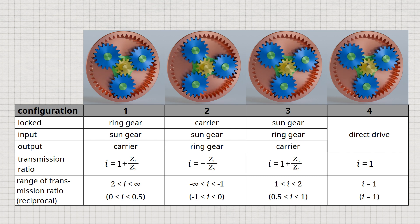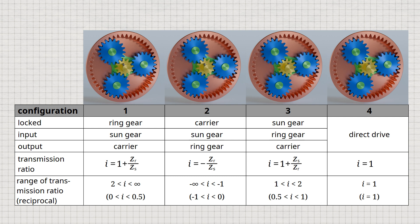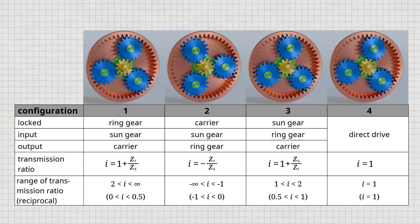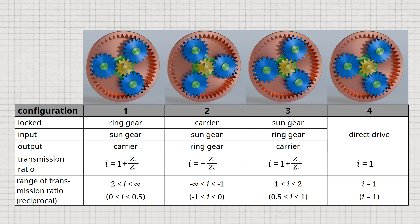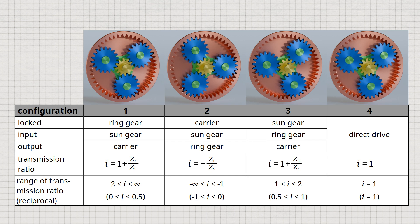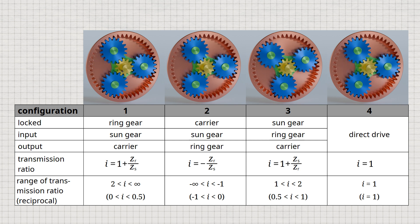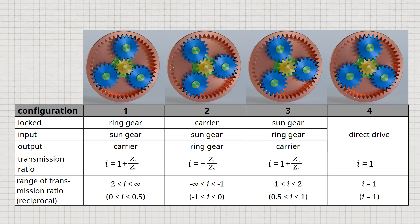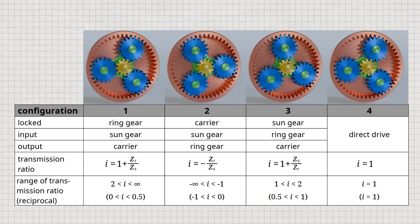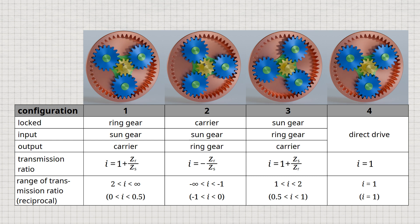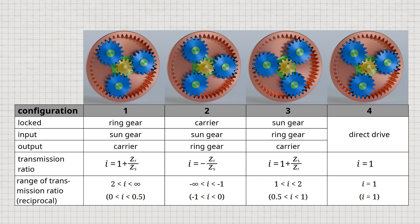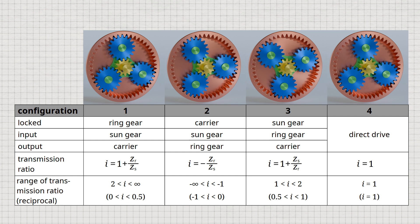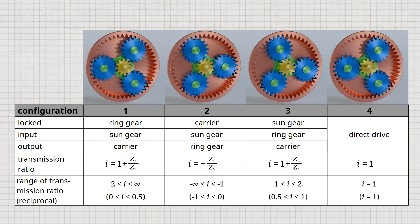For constructive reasons, not all transmission ratios listed in the table can be realized with a single planetary gearbox. However, by combining several individual planetary gear sets, the possible transmission ratios can be increased considerably. In practice, up to three planetary sets are common in a gearbox.